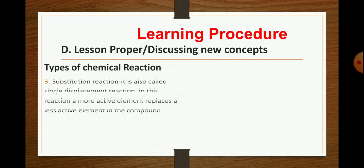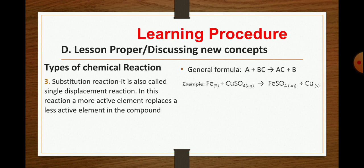Next is the substitution reaction. It is also called a single displacement reaction wherein in this reaction a more active element replaces a less active element in the compound. So it's an elimination. The general formula A plus BC to form AC plus B. Take note in the BC, that is the compound, the molecule wherein the B represents the cation being replaced with this element A to form AC and B.